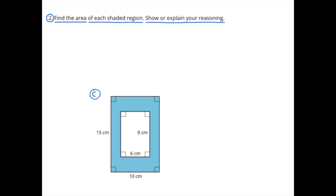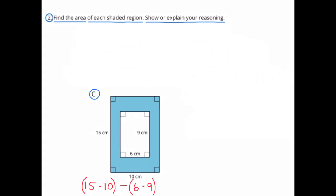C. Here we have a rectangle with dimensions 15 by 10 and a smaller rectangle cut out of the inside with dimensions 6 by 9. The area of the shaded region is 96 square centimeters.